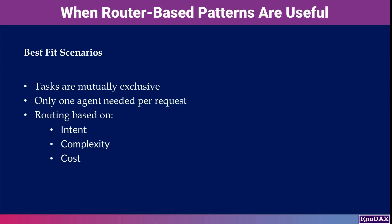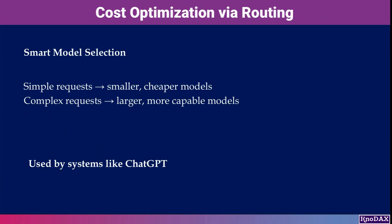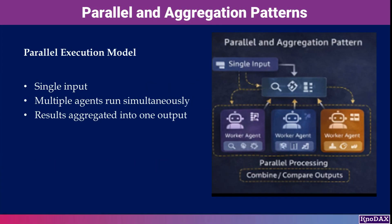Routing decisions are often based on intent, complexity, or cost. For example, simple requests can be routed to smaller, cheaper models while complex requests go to more capable models. This is the same cost-optimization strategy used by systems like ChatGPT.